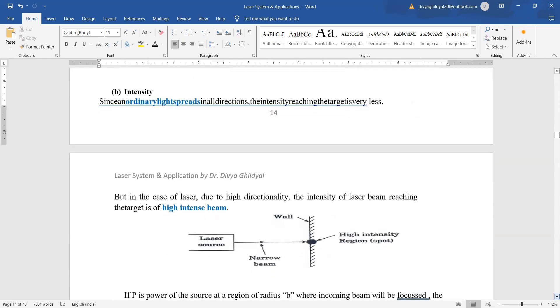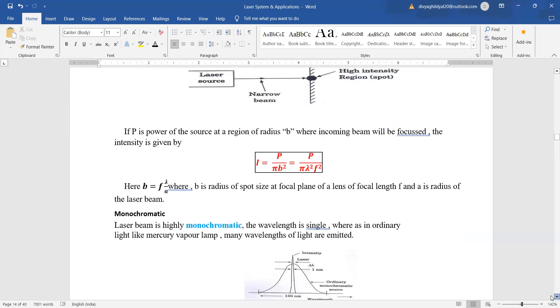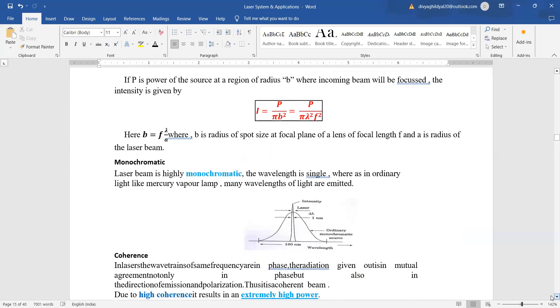Next property of laser, laser light is highly intense. Ordinary light is spreading in all directions whereas laser light is in a specific defined direction and it is highly intense. Due to the high directionality, the intensity of laser beam reaching the target is very high. It is of high intensity. So in this expect a numerical on the formula, how much the intensity is given by power upon area where if P is the power of source at a region and radius is B where incoming beam is being focused, then intensity is given by P upon pi B square. B here is the radius of the spot size at focal plane of a lens of focal length F and A is radius of the laser beam.